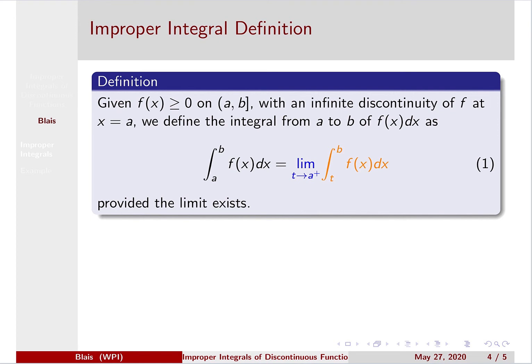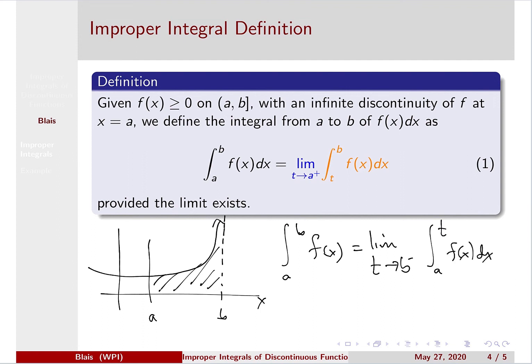Now, note, you can also do this for functions that have discontinuities on the right. So if your vertical asymptote is at x equals b, you would say your integral from a to b of f(x)dx is the limit as t goes to b from the left of the integral from a to t of f(x)dx. So you make the same kind of argument except you're going to the right.